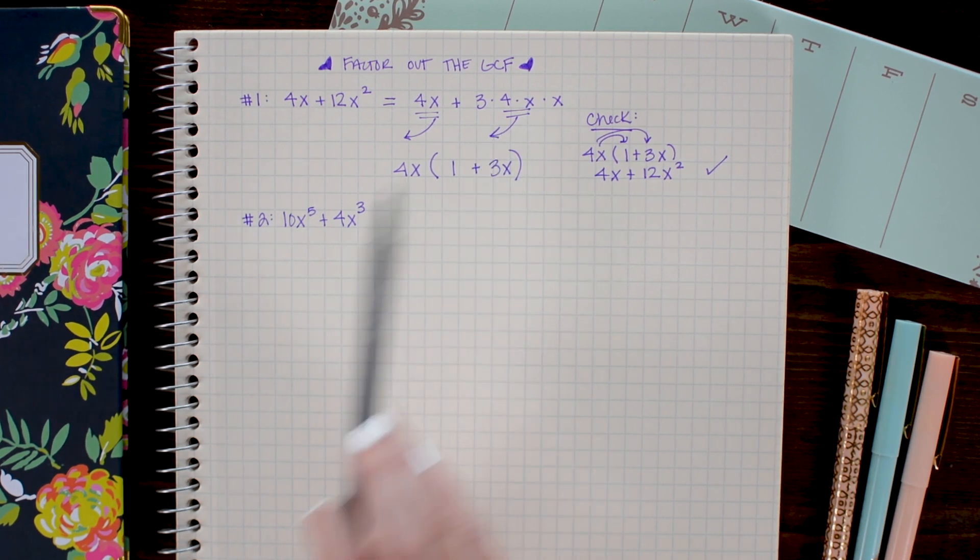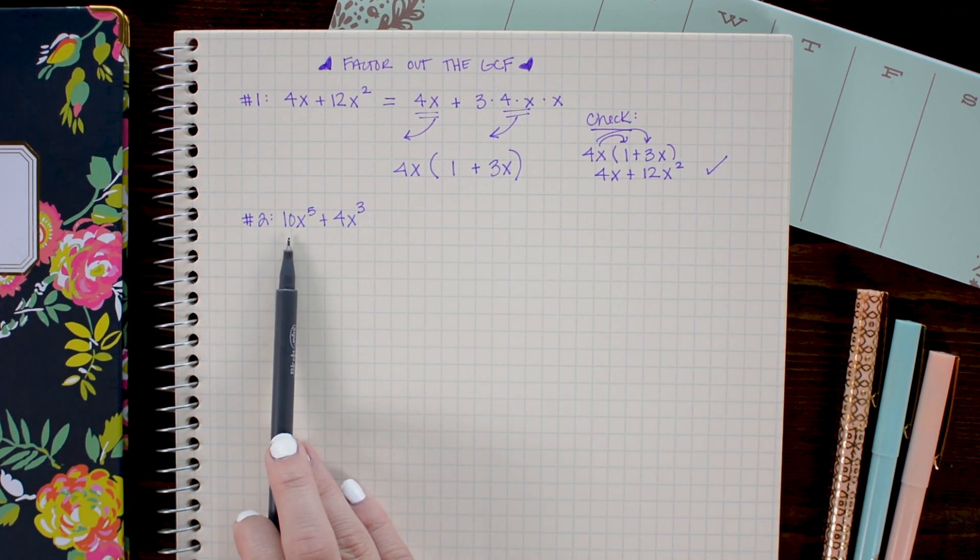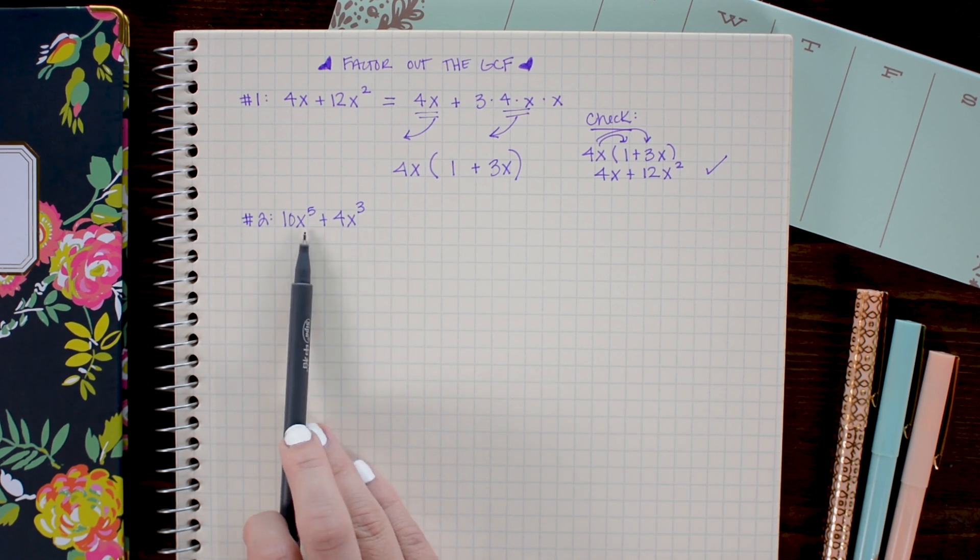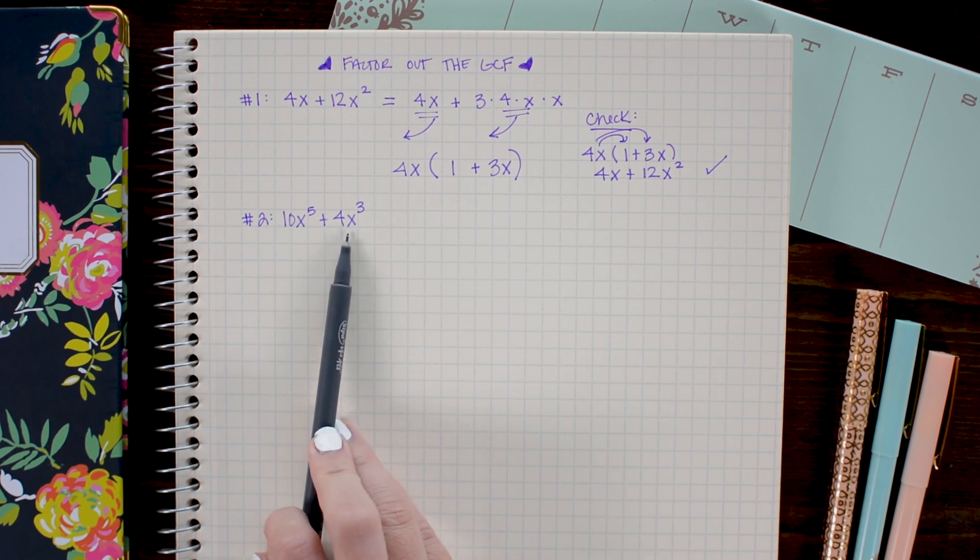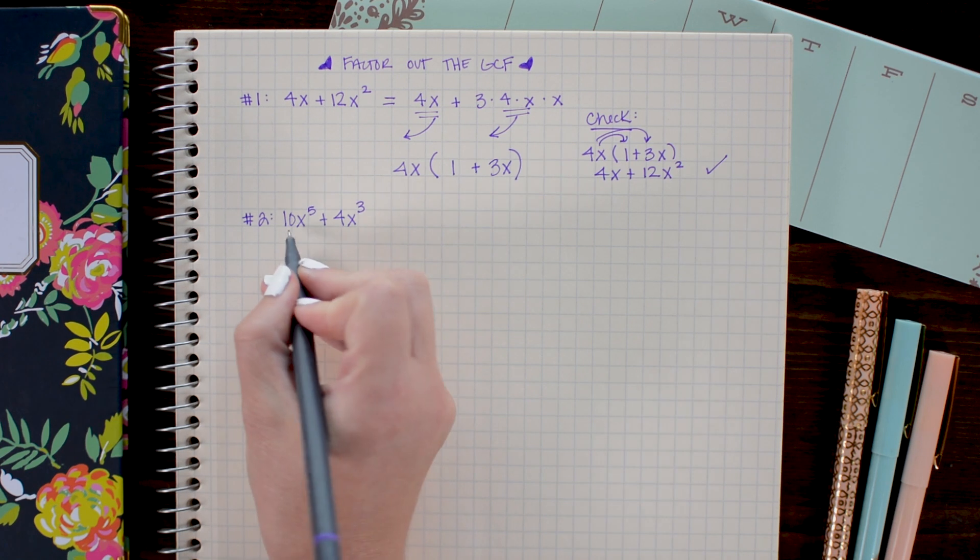So I want to think about what is common to the coefficients and what is common to the variables. On first glance, I see that both 10 and 4 are divisible by 2. So I want to divide out a 2 from both.